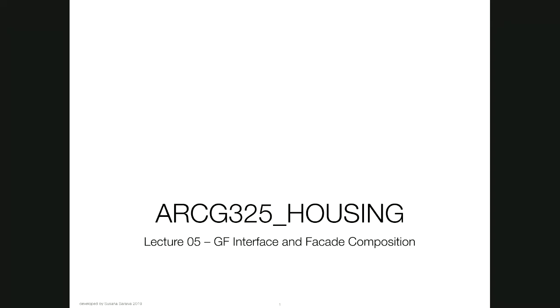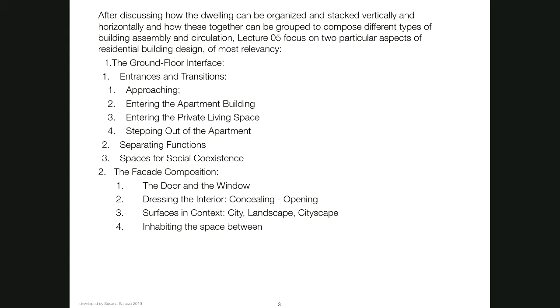Good morning students. Today we are going to navigate through lecture 5 of the ARCG 325 housing course entitled Ground Floor Interface and Facade Composition. This is a topic that is very important for architecture students because after we discuss how the dwellings can be organized and stacked vertically or horizontally to compose a building, we need to focus on these two aspects: the ground floor and the facade.